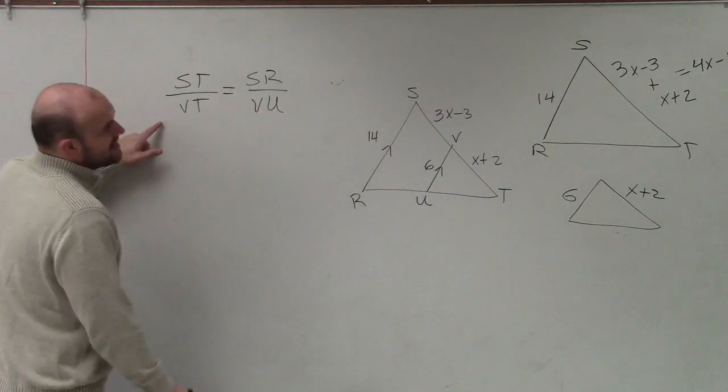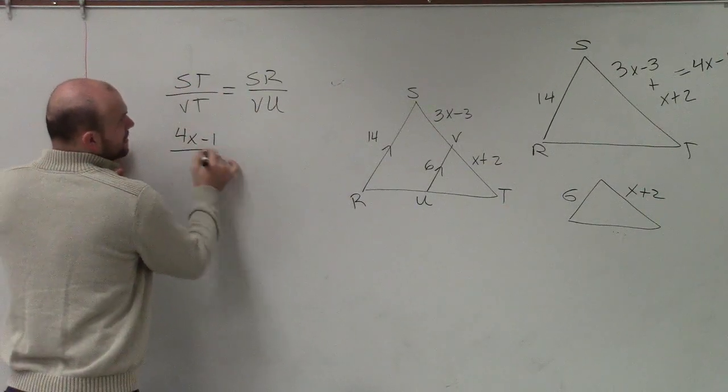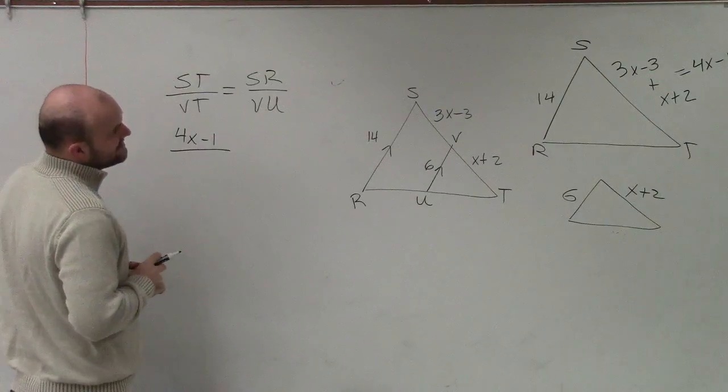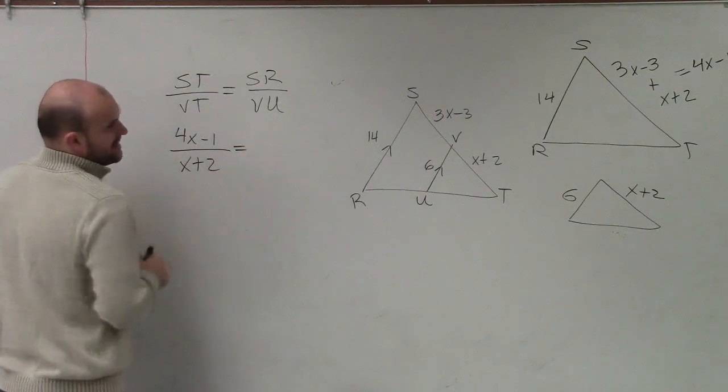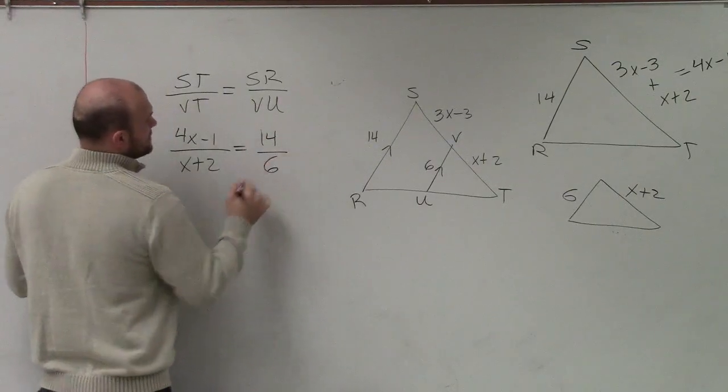So I can say ST is 4x minus 1 over VT, which is x plus 2, which is equal to 14 over 6.